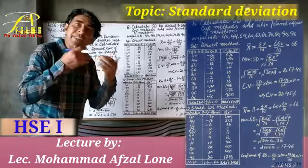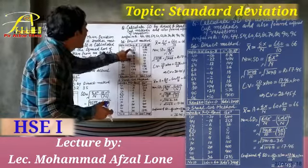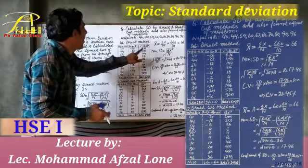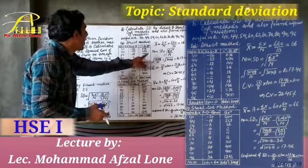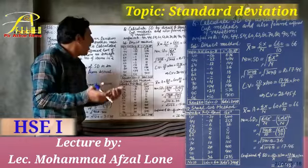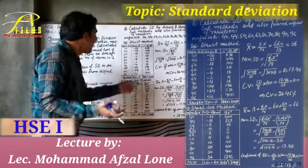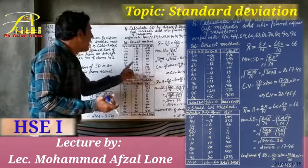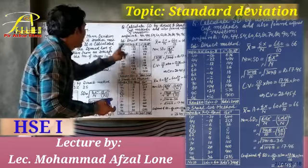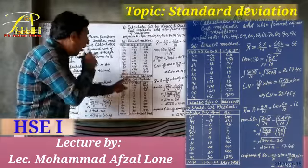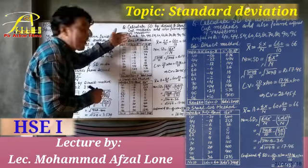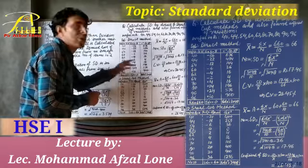Now making the square of these deviations: −26 into −26 = 676; −22 into −22 = 484; −12 into −12 = 144; −6 into −6 = 36; −4 into −4 = 16; −2 into −2 = 4; 4 into 4 = 16; 14 into 14 = 196; 24 into 24 = 576; 30 into 30 = 900. Adding up the deviations, summation of dx equals zero.